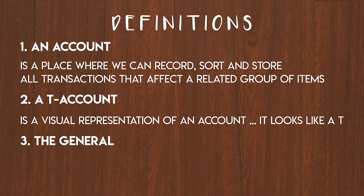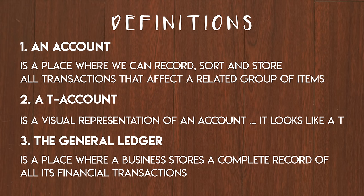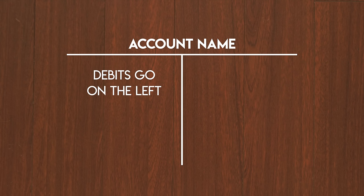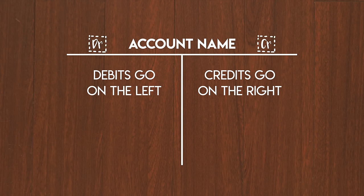Finally, what is the general ledger? It's a place where a business stores a complete record of all of its financial transactions and accounts. Now that I've clarified these terms, let's get back to T-accounts. In its most simple form, a T-account looks like this. Debits go on the left, credits go on the right. If you are having a hard time remembering the sides, you can add a little DR and CR to the top of the T-account. DR and CR are how we accountants write debits and credits in shorthand.